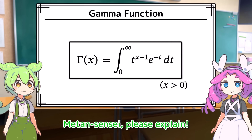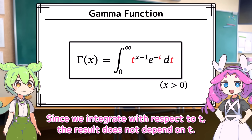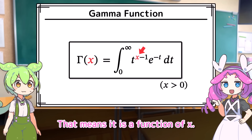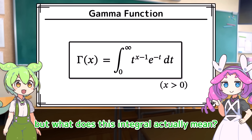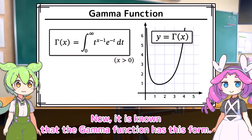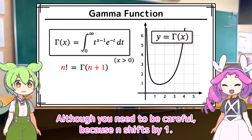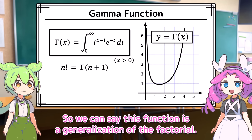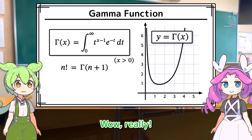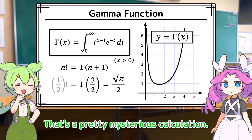What is this function? Neta-sensei, please explain. Very well. This function is defined as a special definite integral. Since we integrate with respect to t, the result does not depend on t — that means it is a function of x. When x is a natural number, this function matches the factorial, though you need to be careful because n shifts by 1. So we can say this function is a generalization of the factorial. It is known that gamma of 3 halves is equal to the square root of pi over 2. This corresponds to the factorial of 1 half.